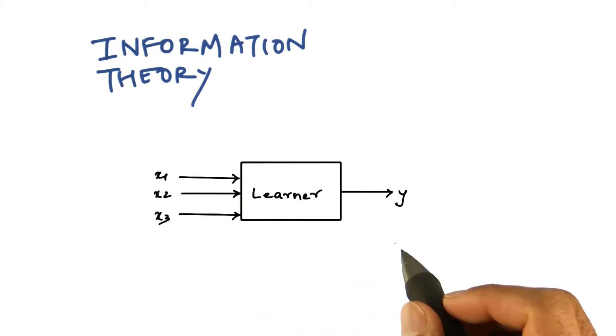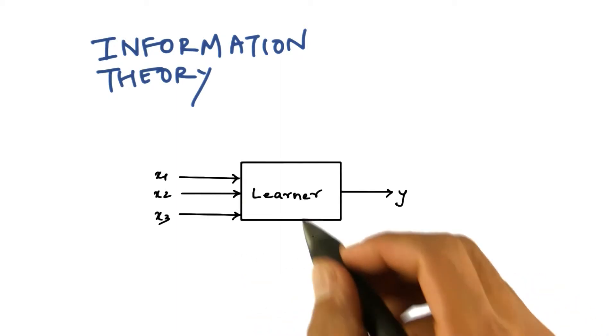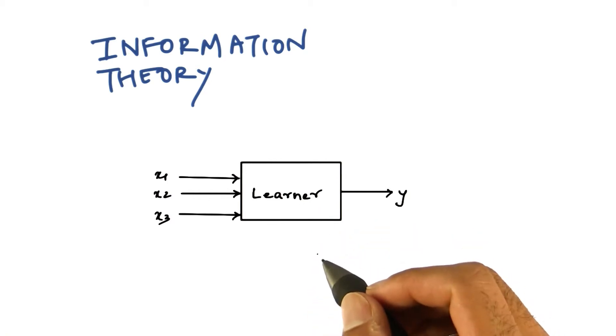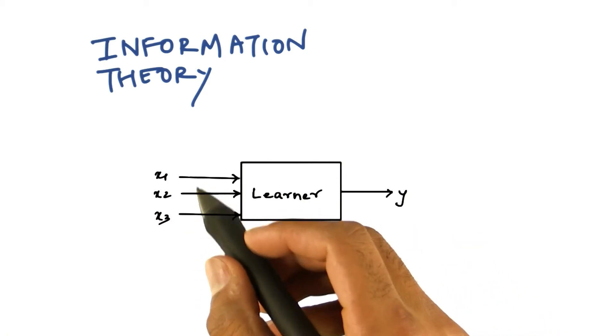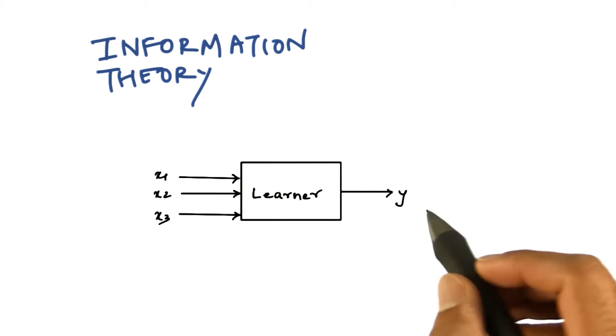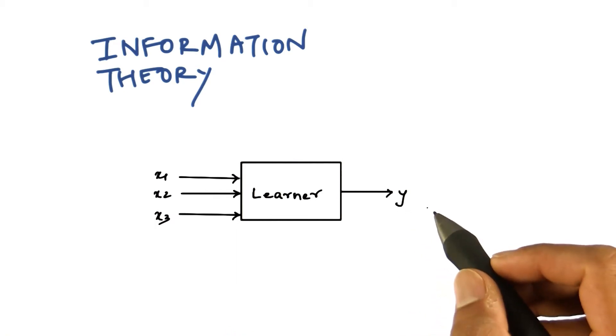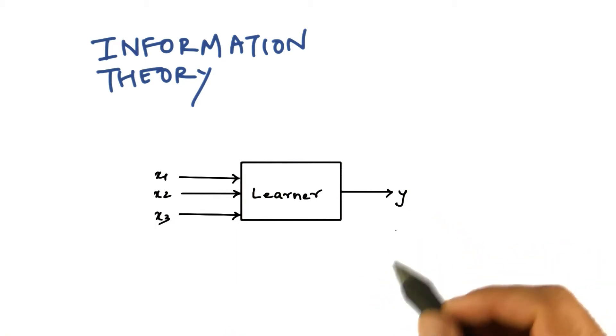So consider this to be any machine learning algorithm. For example, let this learner be a decision tree learner. Now we have several inputs, x1, x2, x3, and one output. For simplification, let's assume that this is a regression problem. That's why we have an output.